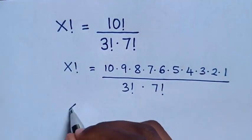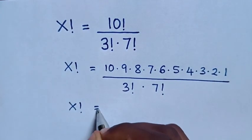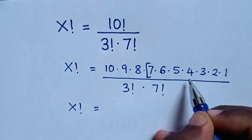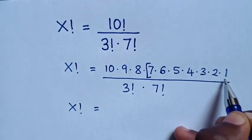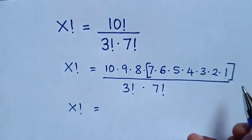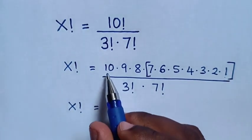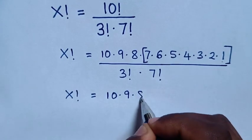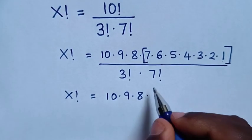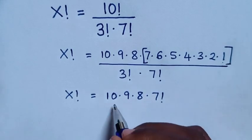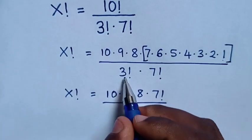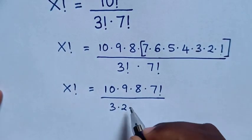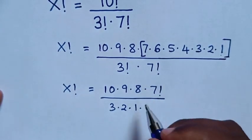In the next step, x factorial equals — we place a bracket from here — 7 times 6 times 5 times 4 times 3 times 2 times 1, then it will be 10 times 9 times 8, times the bracket, which is the same as 7 factorial, over 3 factorial, which is the same as 3 times 2 times 1, times 7 factorial.